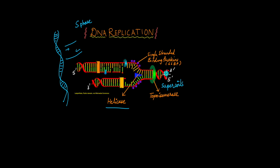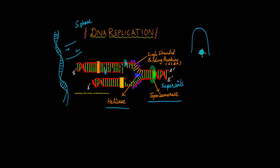Supercoils are not good for replication — they can even stop the entire process from happening. To prevent the other parts of the helix from supercoiling, the enzyme known as topoisomerase stabilizes the helix. To understand supercoiling, imagine you have long hair full of knots and you are combing it — the knots tend to get stuck to the bottom of your head. Similarly, as the helix is opening up in one place, the other parts tend to supercoil, and that is what topoisomerase prevents.